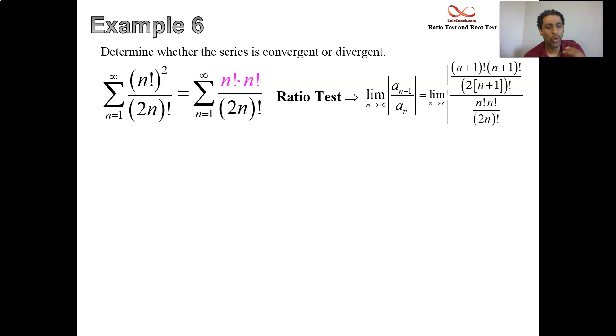Replacing the n's with n plus ones wherever they are, numerator versus denominator. Be careful with the 2n quantity factorial. When you replace n with n plus 1, it's 2n plus 2. You got to distribute, but still all inside parentheses with a factorial on it.